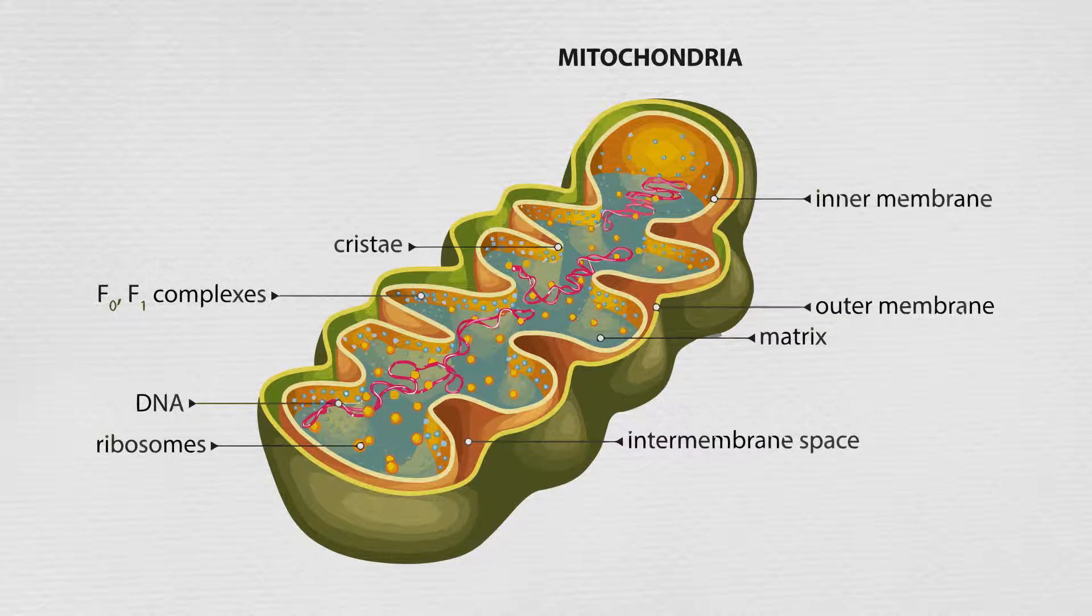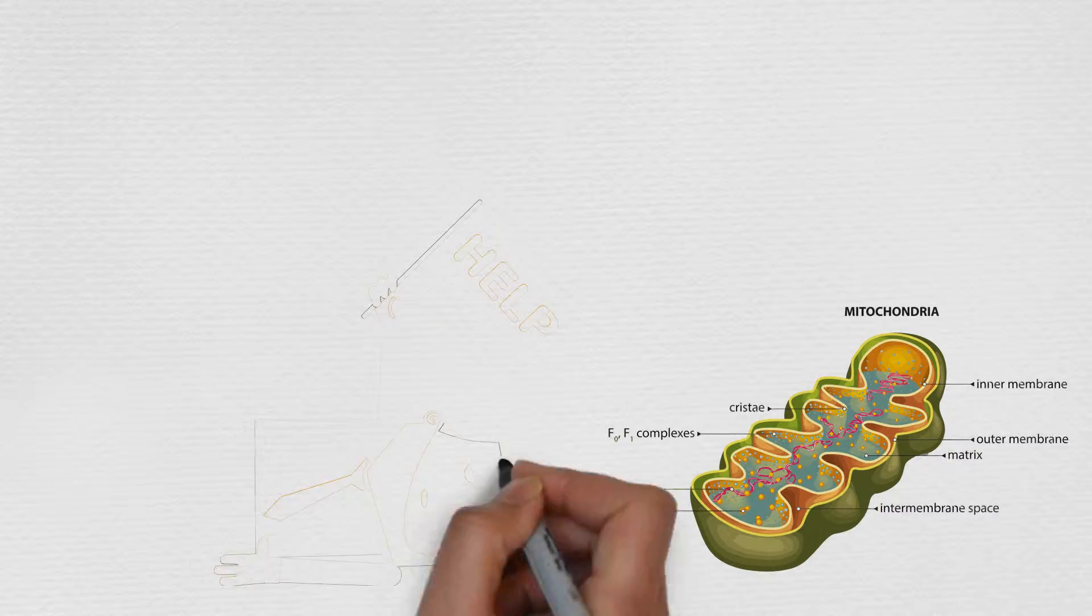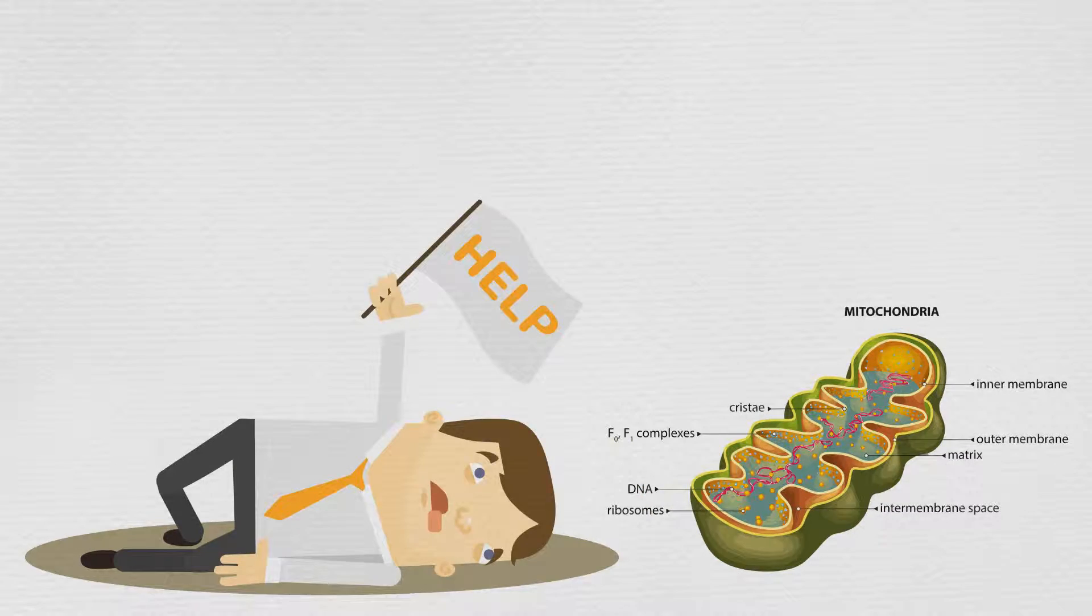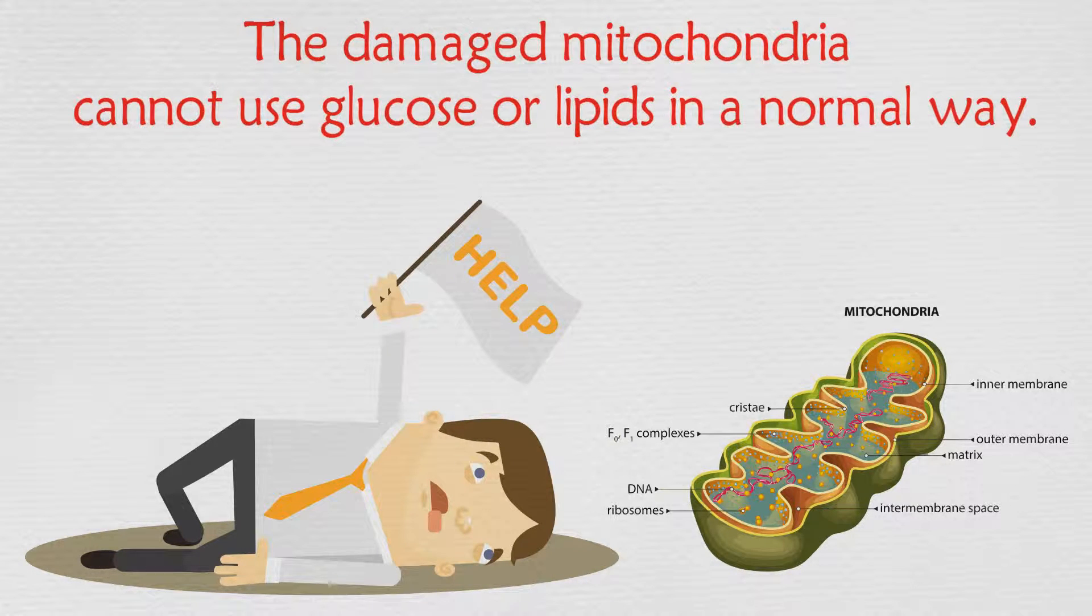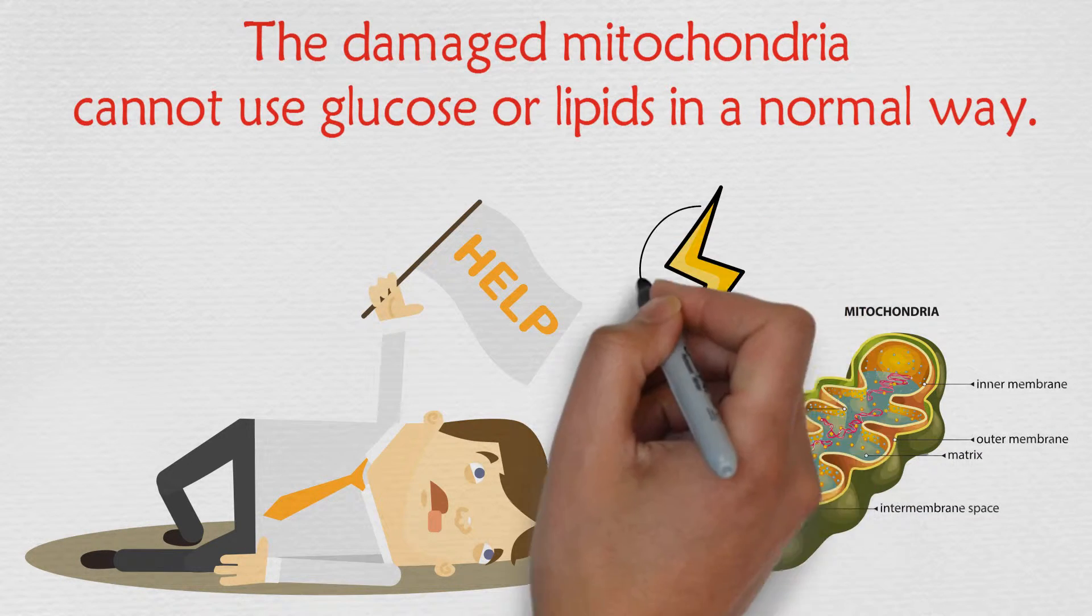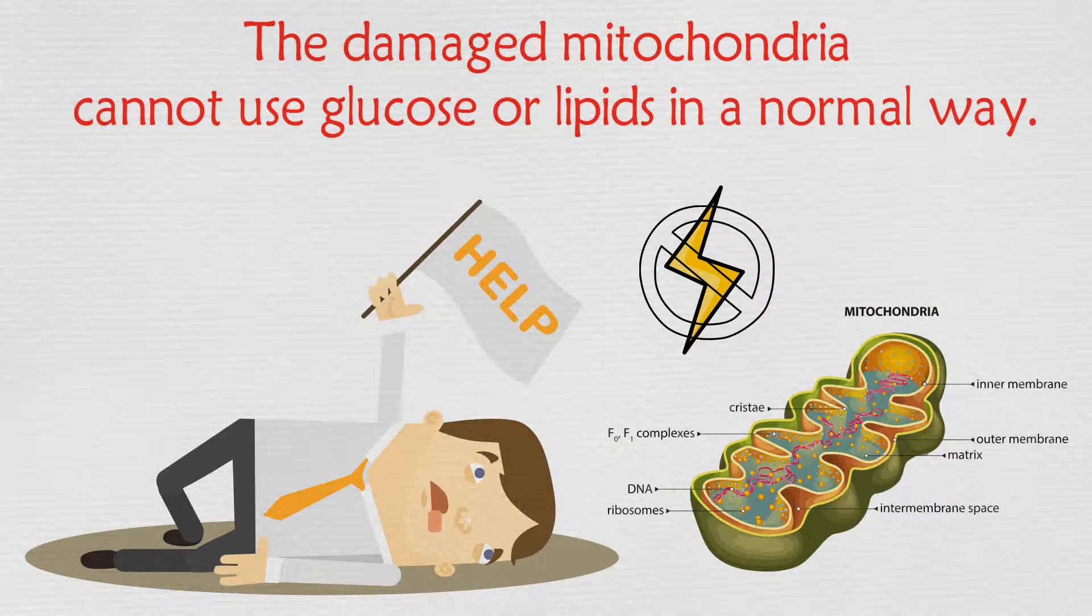The damaged mitochondria will produce less ATP, that is energy, than a normal mitochondria. Additionally, the damaged mitochondria cannot use glucose or lipids in a normal way. This means that a person with high blood sugar is unable to produce as much energy as they should.